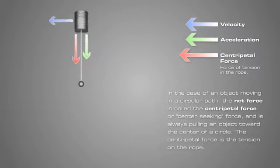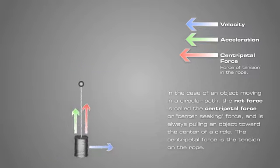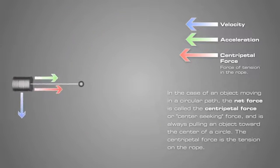Without this force, an object will continue moving in a straight line motion. The centripetal force is the tension on the rope.